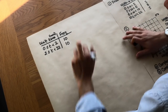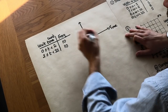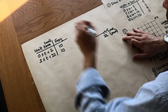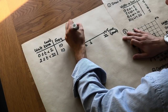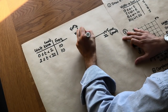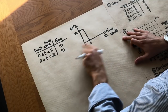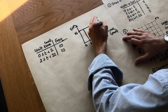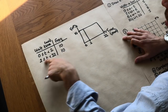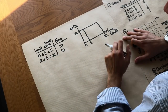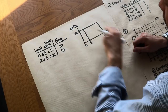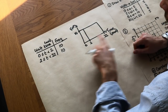We might be tempted to draw it like this: time on the x-axis with 0, 2, and 22 minutes, and frequency on the y-axis. Drawing bars, 0 to 2 has frequency 10 and 2 to 22 also has frequency 10. But what's misleading is that those 10 people in the second bar are spread over a much wider variety of waiting times, while the first 10 are concentrated over a narrow range.